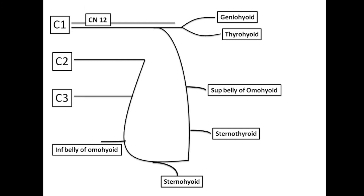An important point: C1 is in close proximity to cranial nerve 12, which is why it is called the descens hypoglossi. This cranial nerve 12 moves forward and gives rise to branches supplying the muscles of the tongue. Now the mnemonic I will give you covers the muscles in order: geniohyoid, thyrohyoid, superior belly of omohyoid, sternothyroid, sternohyoid, inferior belly of omohyoid — the entire sequence.